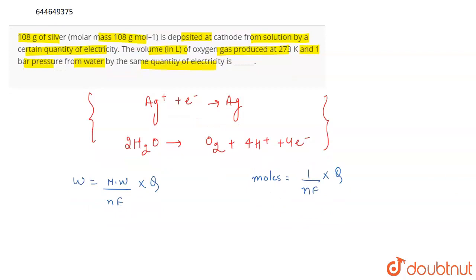So, if I consider this as the first equation and this as the second equation and I divide the first and the second equation, this will be W by moles. W, what is the weight of silver? 108 grams moles.